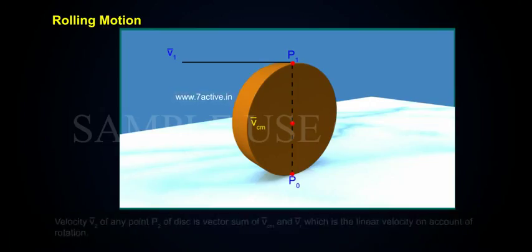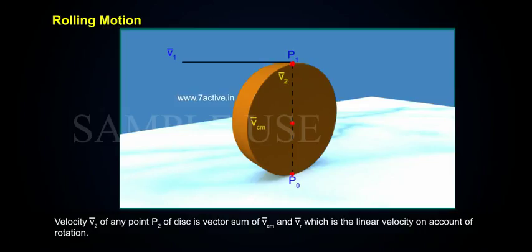Velocity V₂ of the boundary point P₂ of the disk is the vector sum of VCM and VR, which is the linear velocity on account of rotation.